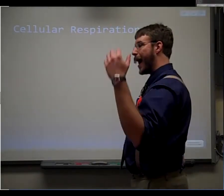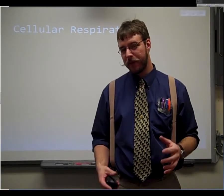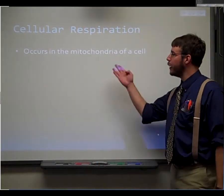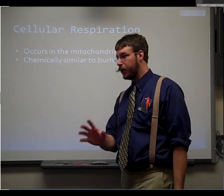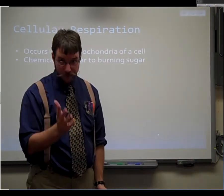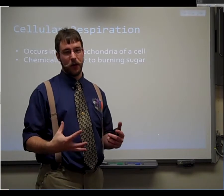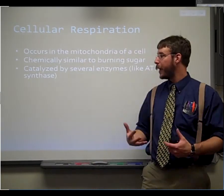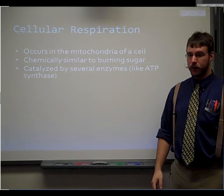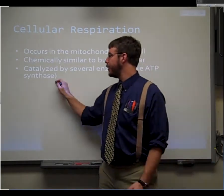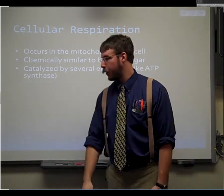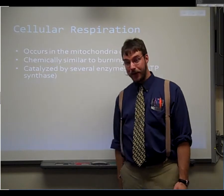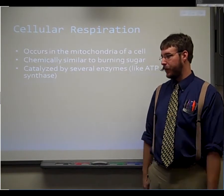Now that we have a good understanding of how your body uses ATP, let's look in depth at the process of turning ADP into ATP — it's called cellular respiration. It happens in the mitochondria. It is chemically similar to setting sugar on fire. It uses oxygen, just like setting things on fire does. However, it's catalyzed by several enzymes, so you don't need all the energy of fire to burn that sugar. One of the major enzymes in play here is ATP synthase — you do need to know this one. Remember, '-ase' at the end of a word means enzyme, so it's the ATP-synthesizing enzyme — literally the one that makes ATP for you.